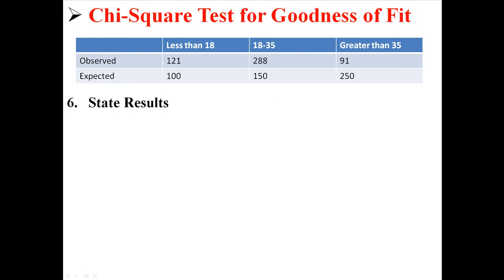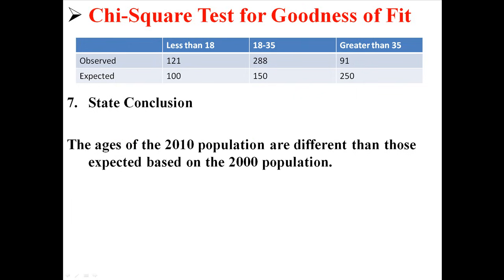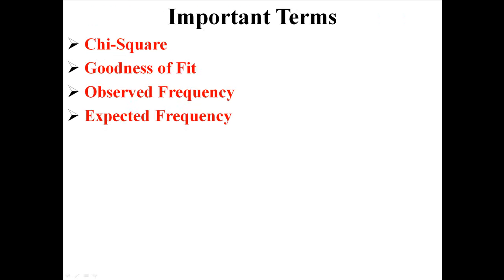Which brings us to the result. Remember, we're going to reject the null if it was greater than 5.99, and it definitely was, 232. So, we will reject the null hypothesis, and say that the ages of the 2010 population are different than those expected, based on the 2000 population. The sample that we observed was different than the sample we expected to find, using a chi-square test for goodness of fit.